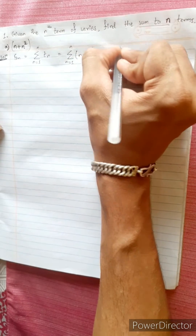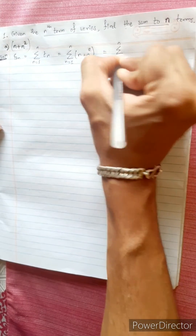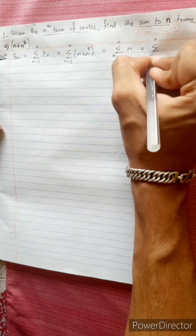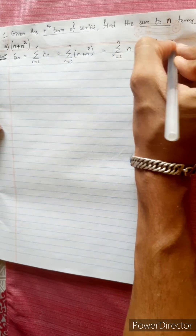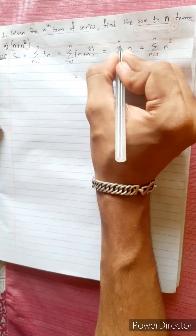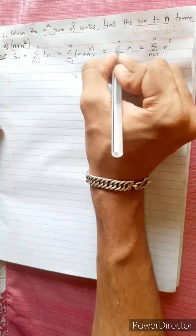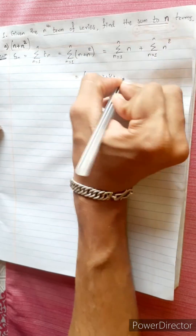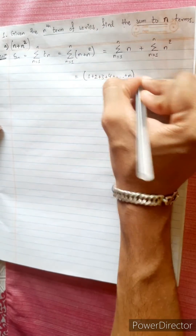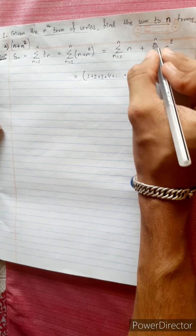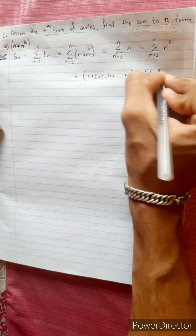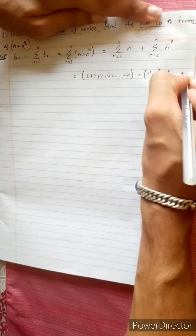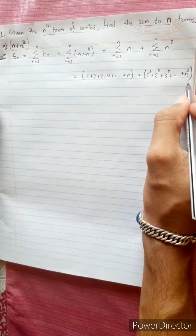We separate the summation: summation of n plus summation of n squared. That is, (1 + 2 + 3 + 4 + ... + n) plus (1² + 2² + 3² + ... + n²).